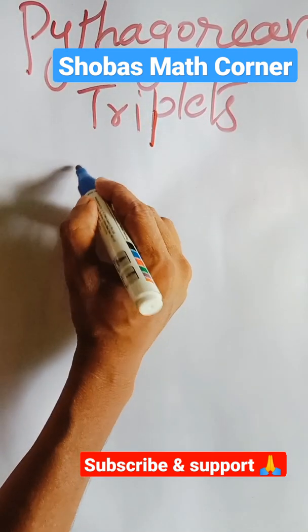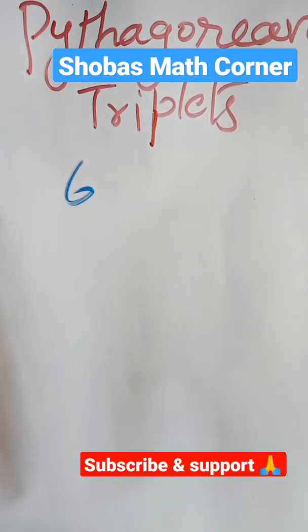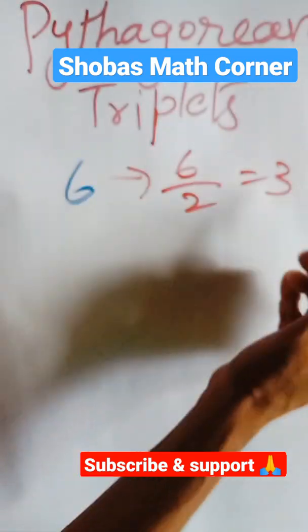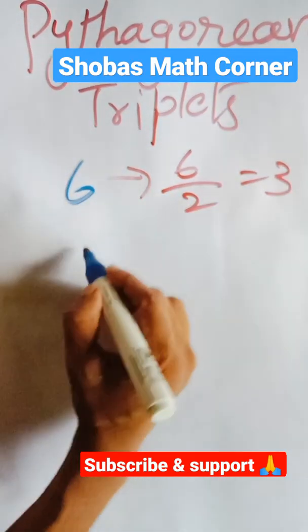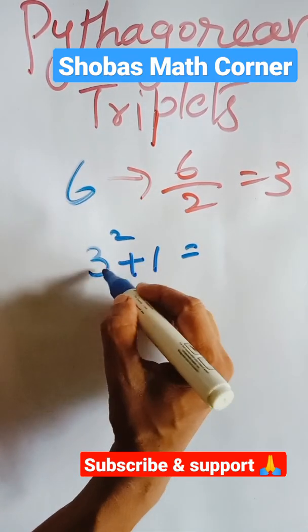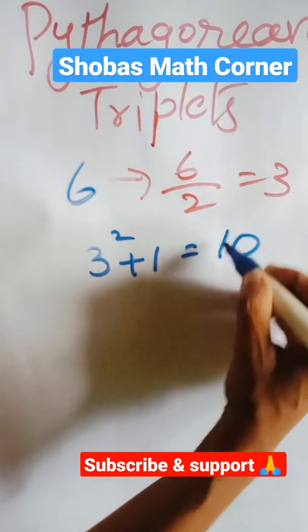First number I have taken is 6. How to find the other two numbers? It's very simple. Take half of this: 6 divided by 2 is equal to 3. Then make the square of this 3. 3 square add 1 to this number. So what is 3 square plus 1? 3 into 3 is 9, 9 plus 1 is 10.